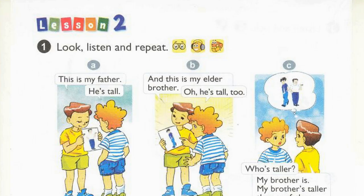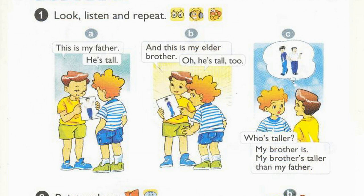Page 26, Lesson 2, Activity 1. Look, listen and repeat. A. This is my father. He's tall. B. And this is my elder brother. Oh, he's tall too. C. Who's taller? My brother is. My brother's taller than my father.